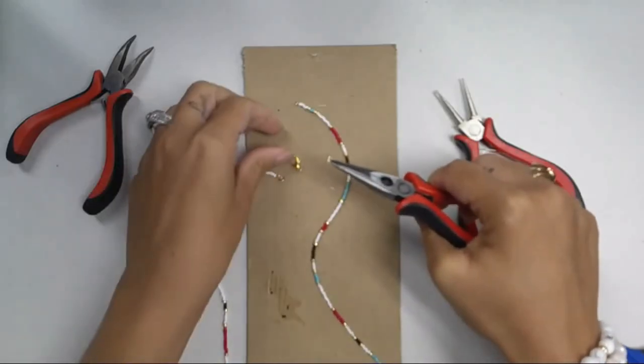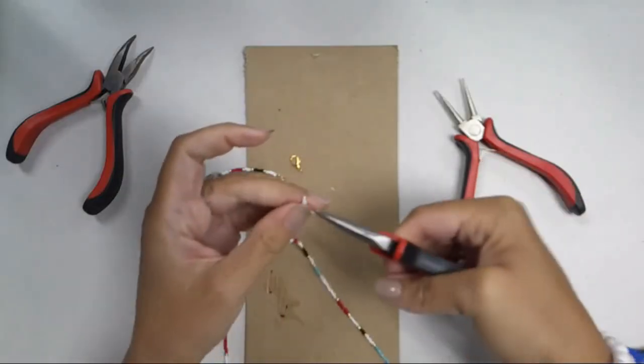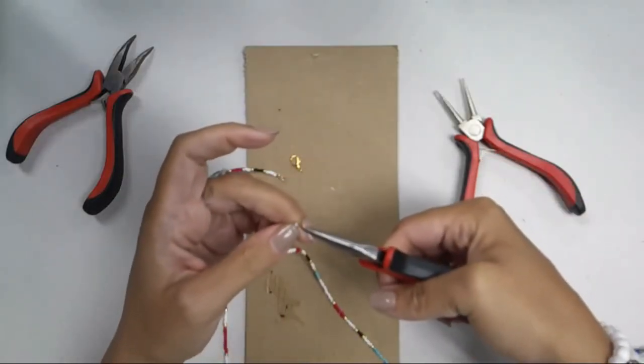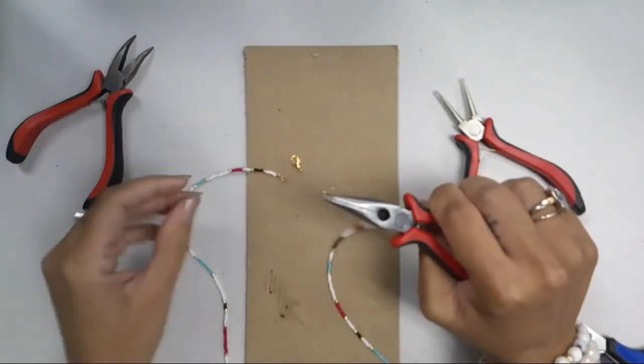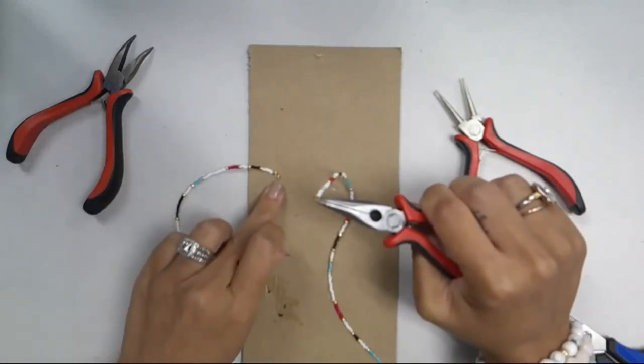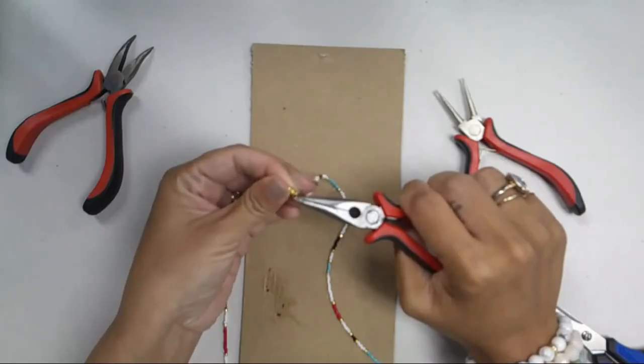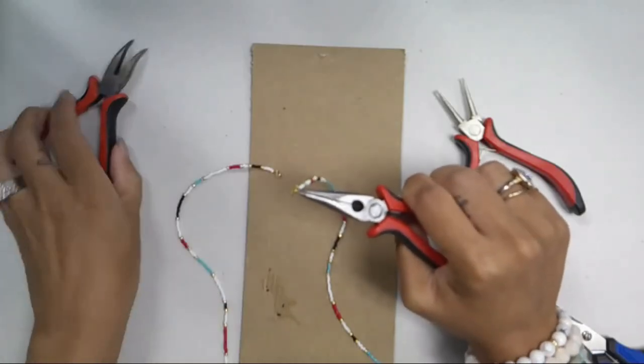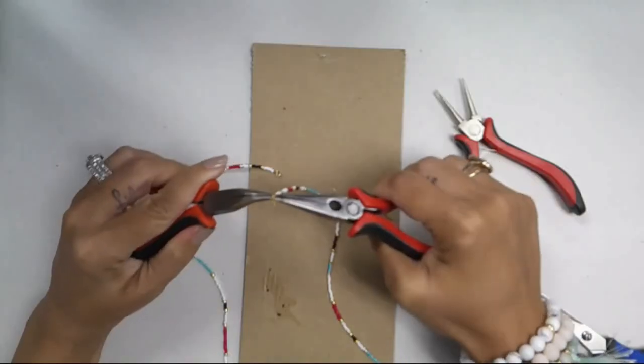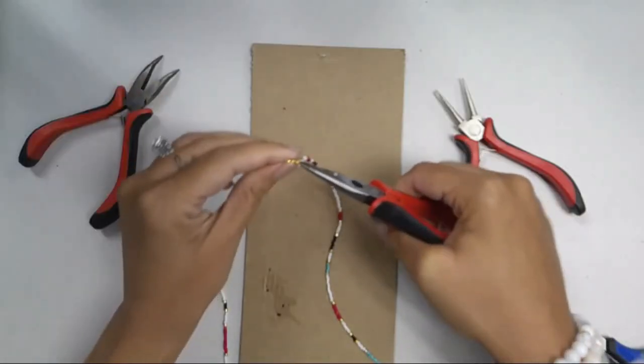So on my next one here, I put the jump ring on. So I opened it, put it on this other loop. I'm also going to hook on a lobster clasp. If you want to use a toggle clasp, you can do that as well. You would put part of the toggle on here and the other component on this one. So I'm going to slip the lobster clasp on like that and close it up completely.